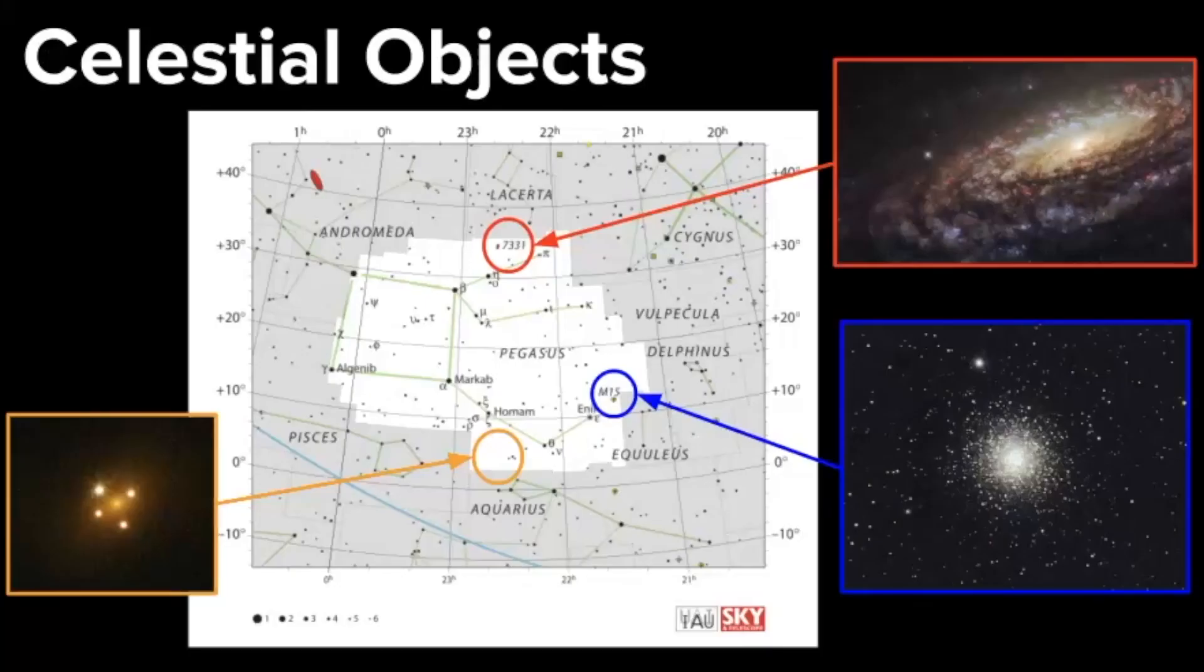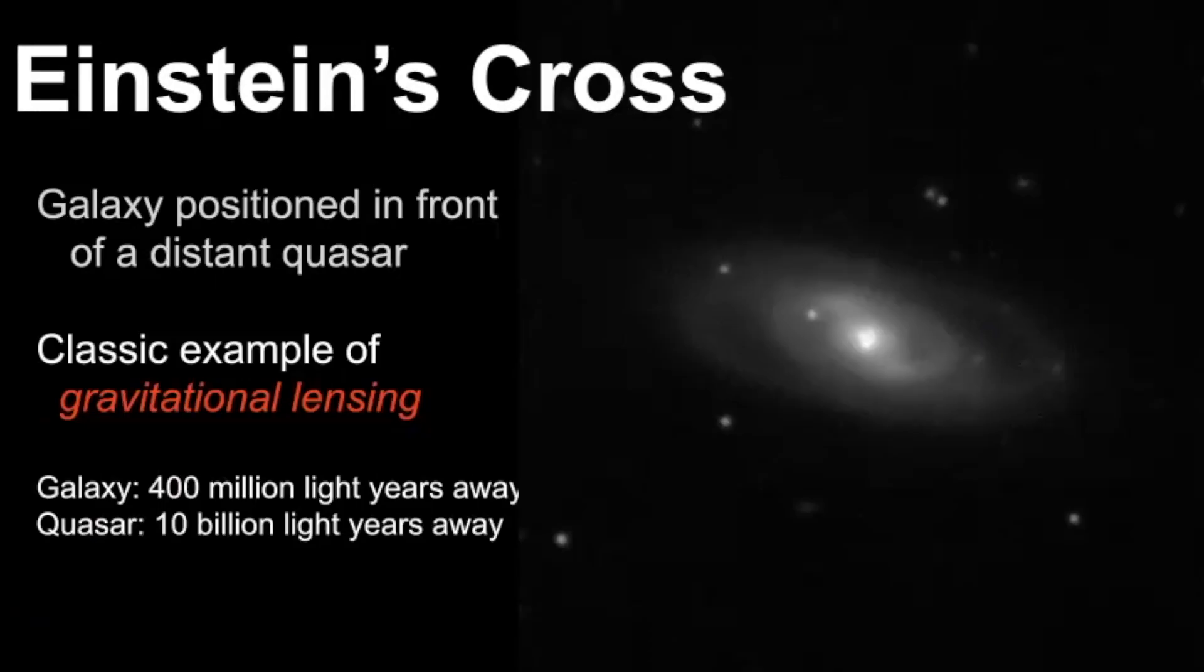So Pegasus has some really cool galaxies to look at. It's got an awesome star cluster, but the really fascinating object to me in this constellation is something known as Einstein's Cross, and this is what's known as a cosmic mirage. So let's dive in and learn about what this phenomenon is.